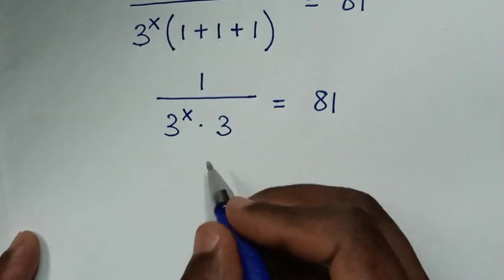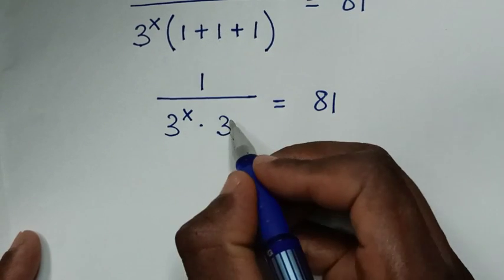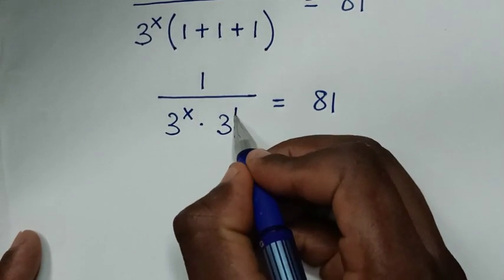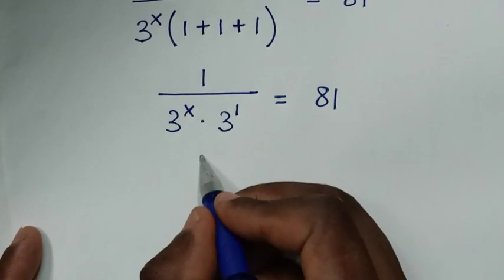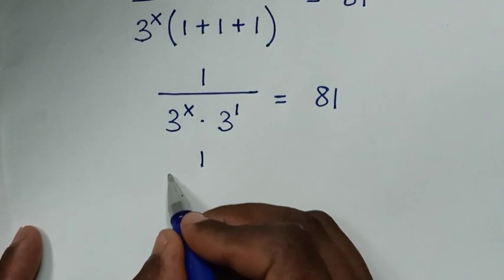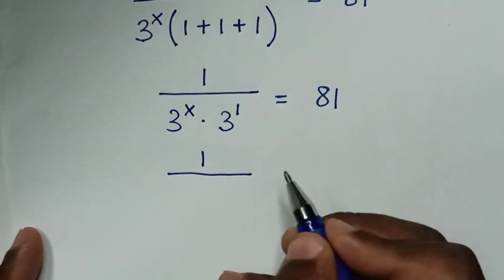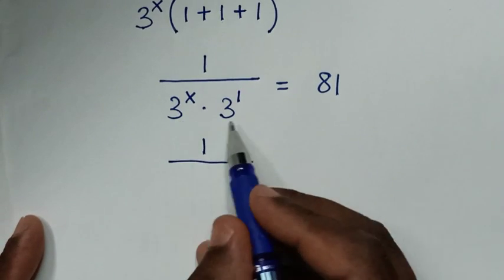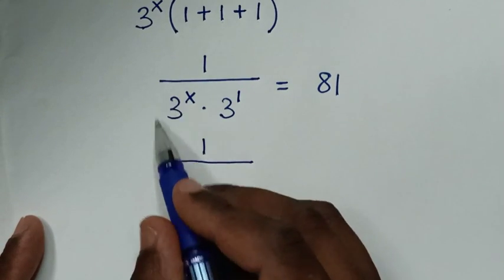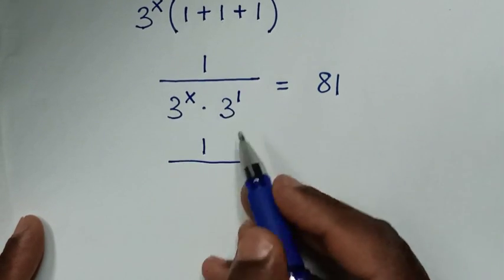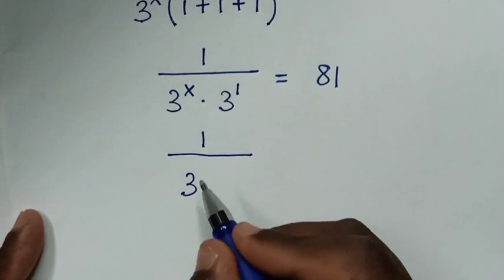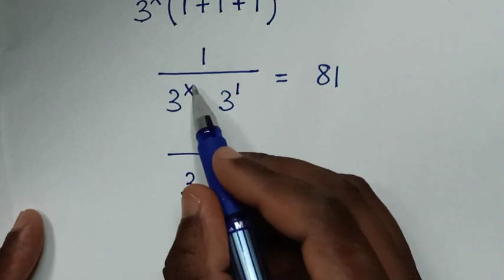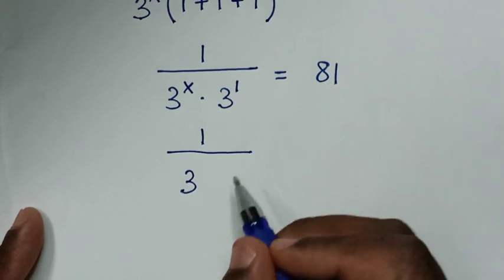In here, 3 is the same as 3^1, so it will be 1 over — in this multiplication of exponents with the same base of 3 — it will be 3^(x+1).